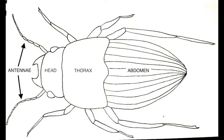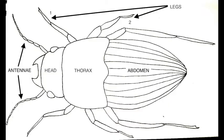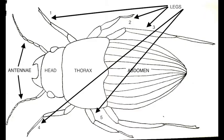Insects also have some legs just like us. You can reach down and touch your legs. So do insects have two legs like us? No, they definitely have more. So let's go ahead and start counting them. One, two, three, four, five, six. Insects have six legs.